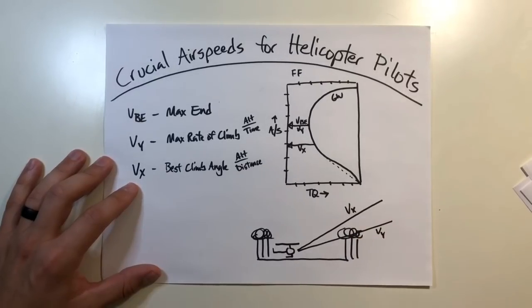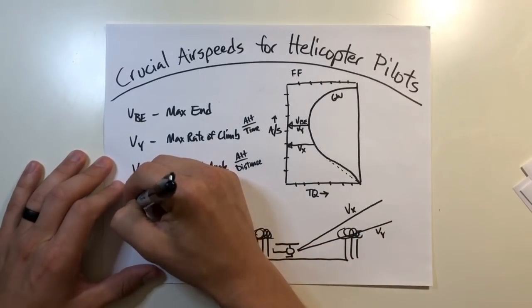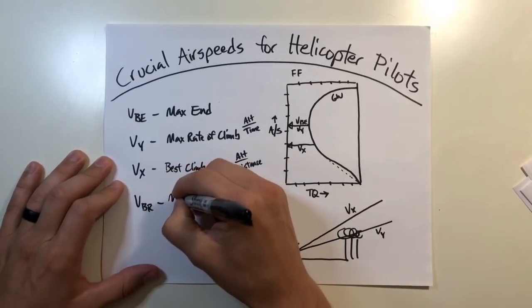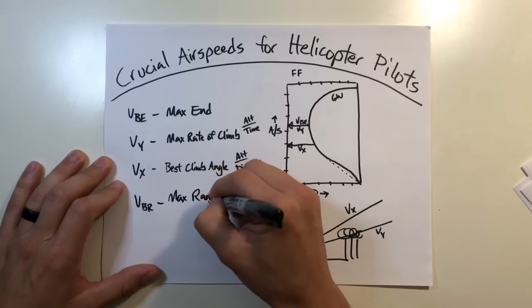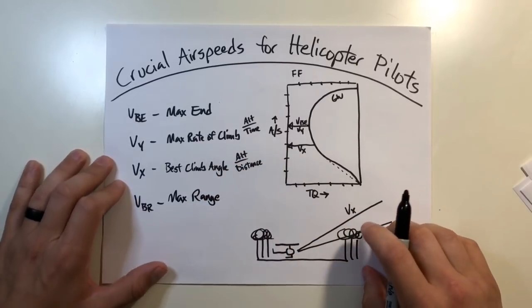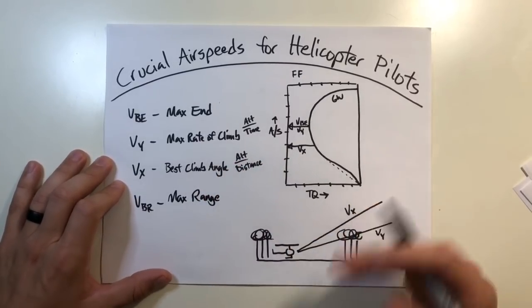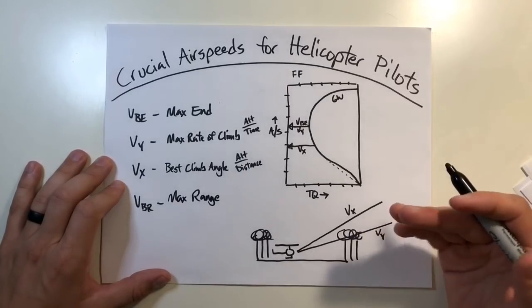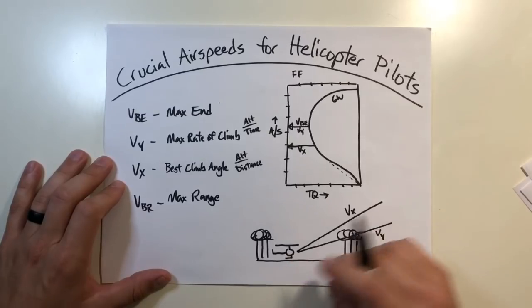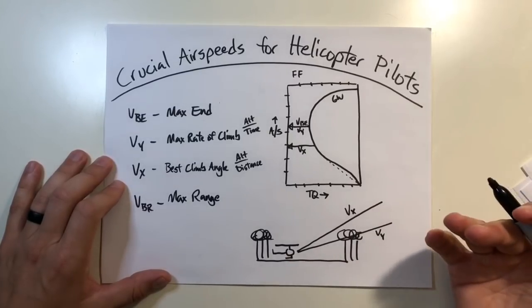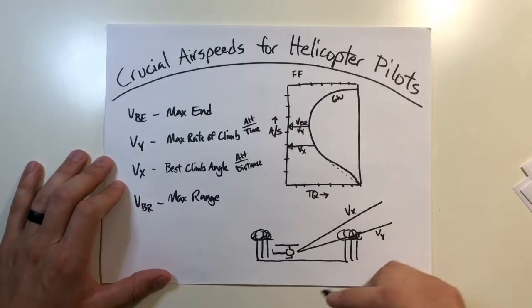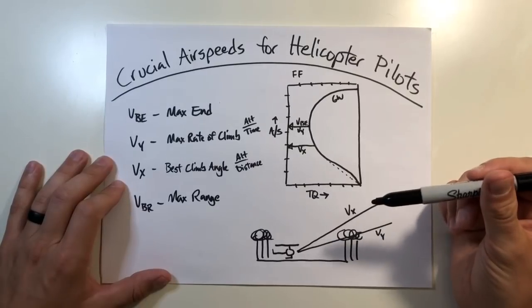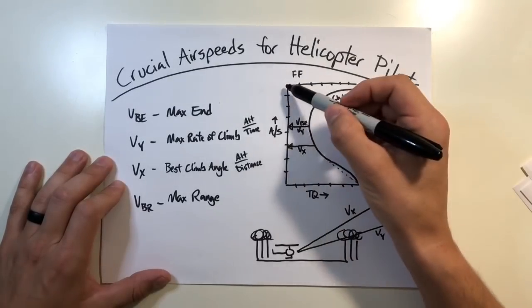Alright, so the next one is going to be our VBR, and this stands for velocity of best range, also referred to as your max range airspeed. This is the speed that gives you your greatest range per unit of fuel consumed, think of it as being the speed that gives you the most miles per gallon. So anytime you're transitioning from A to B, this is the speed that is most efficient for getting you there. It's calculated by dividing your fuel flow per hour by your airspeed and finding where that range per unit of fuel is highest.